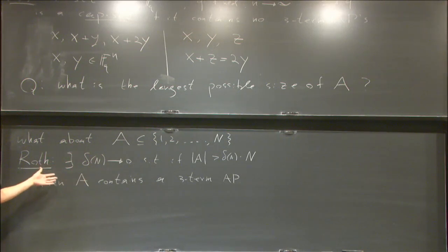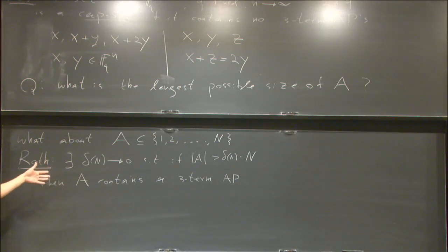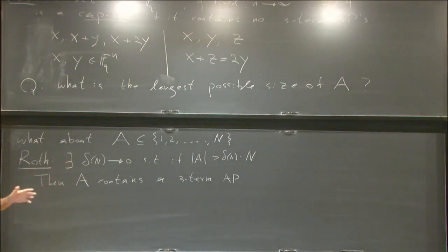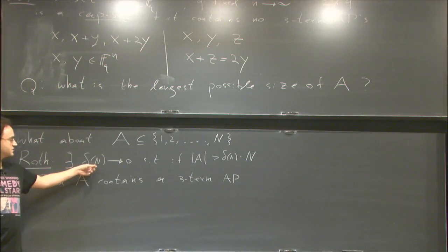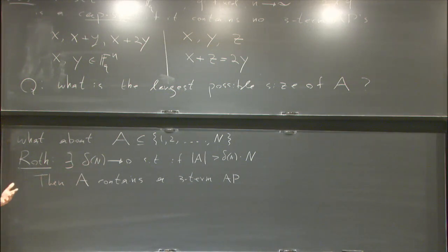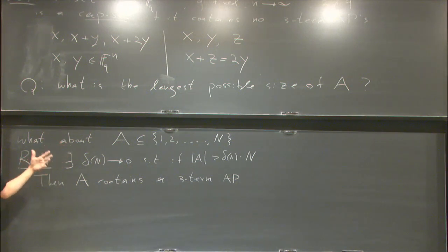You can ask this also for any k-term progression. There's a famous result of Szemerédi that this still holds for k-term progressions. There's a more recent proof by Gowers that gives quantitative estimates for delta. This type of question is central in additive number theory, and the techniques for proving such theorems have been very influential — including in ergodic theory, though ergodic proofs usually don't give quantitative estimates on delta.